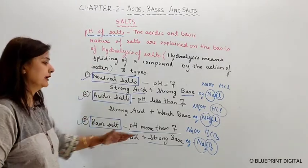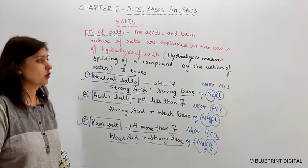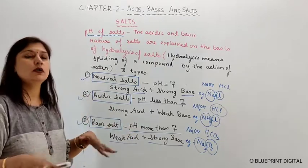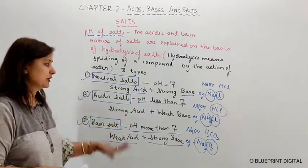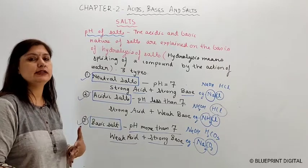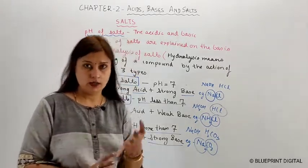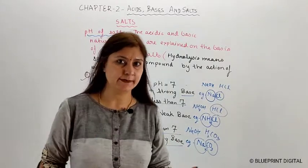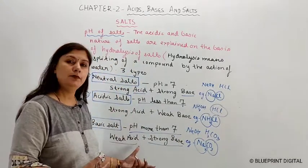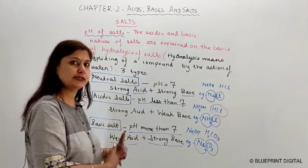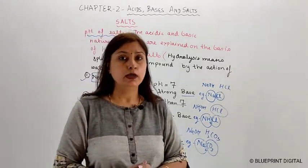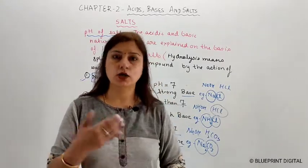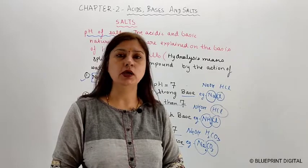So to summarize: neutral salt comes from strong acid and strong base; acidic salt comes from strong acid and weak base; basic salt comes from weak acid and strong base. In this video we have seen what salts are, how they are prepared, how to identify them, and how to judge their type based on pH. In the next video, we will discuss the six important salts — their properties, uses, and preparation.